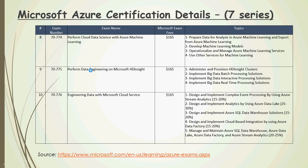Exam 775 is data engineering, focused on data engineers working with big data and HDInsight clusters. Roles such as data scientists, data engineers, big data architects, and data architects would all focus on the seven series.